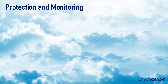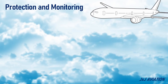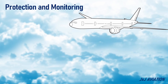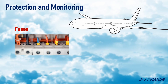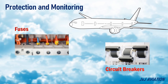Protection and monitoring of electric power: To protect the circuit from an electrical overload, fuses or circuit breakers are installed. In case of an overload, fuses melt off and a replacement of the affected fuses becomes mandatory. However, if circuit breakers are installed, they will trip in case of an overload, and the tripped circuit breakers may be reset in certain conditions.